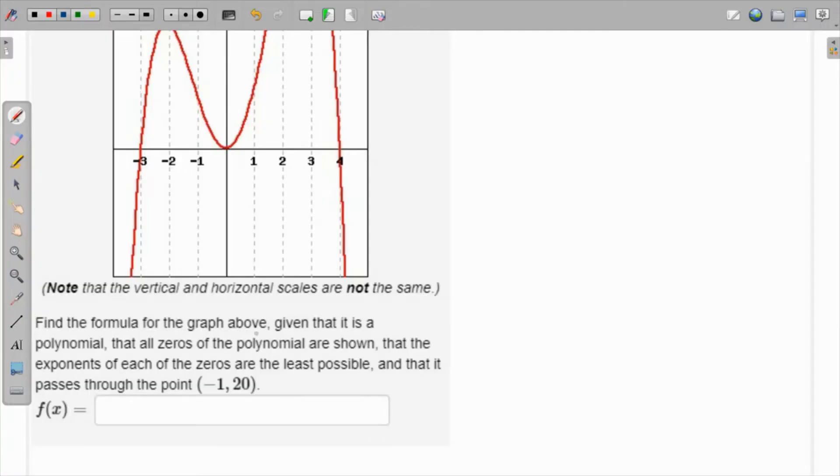We have to find a formula for the given graph above, given that it is a polynomial that has all zeros as shown. So all the zeros are shown, which means there are no complex zeros.